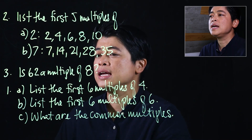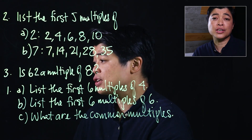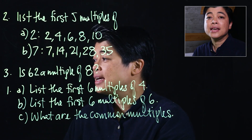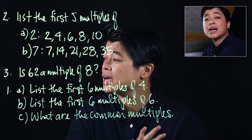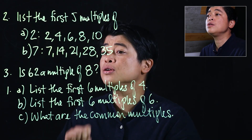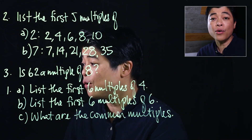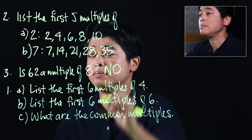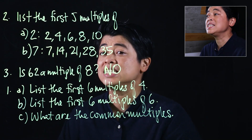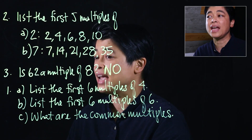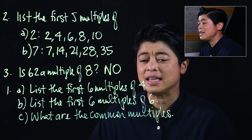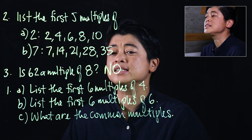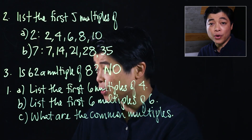In problem number three, the question asks: is 62 a multiple of eight? If you count through the multiples of eight, you will know that 62 is not, but 64 is. So that means 62 is not a multiple of eight.